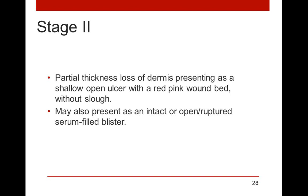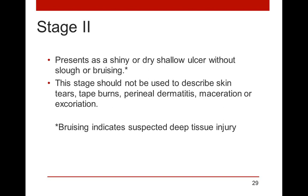Stage two: now we've got some skin loss. It's a partial thickness loss of the dermis — a shallow open ulcer with a red, pink, or pale pink wound bed, but no slough. It may present as an intact or open blister; if it's a serum-filled blister, we've had a separation of the epidermis and dermis, which qualifies as stage two. Stage two ulcers present as shiny, shallow ulcers with no slough and no bruising — if there's bruising in a stage two, it constitutes a DTI. It should not be described as a stage two if it's a skin tear, tape burn, or dermatitis; those are their own categories.